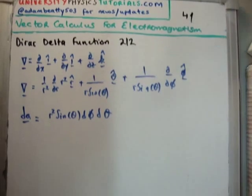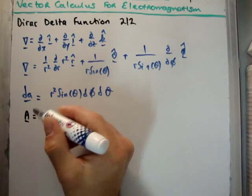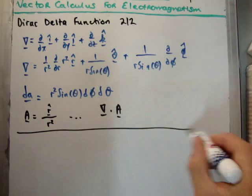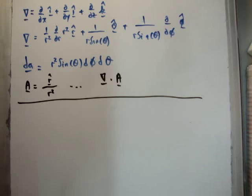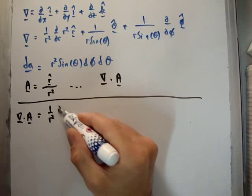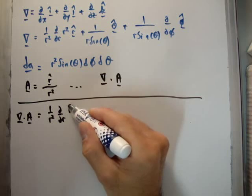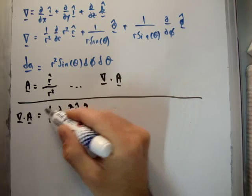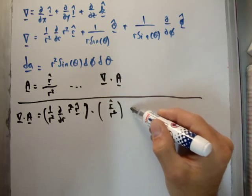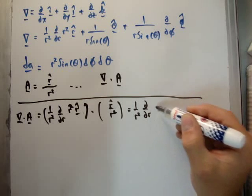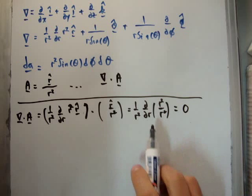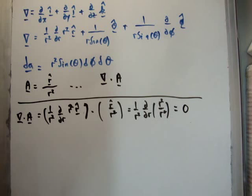Here comes the interesting part. Let us make a new function, call it capital A, a vector function, and it's going to be r hat divided by r squared. And what I want to do is calculate the divergence of this particular vector field. The divergence of A is going to be 1 over r squared del del r of r squared over r squared, and if you put it all together, you're going to get 0, because d dr of 1 is 0. So, the divergence of this particular vector field is 0.